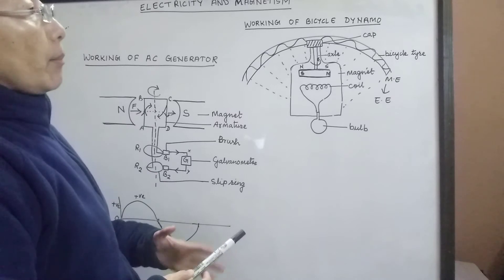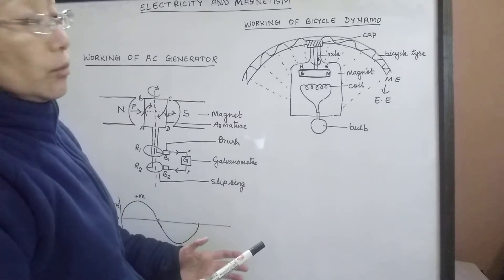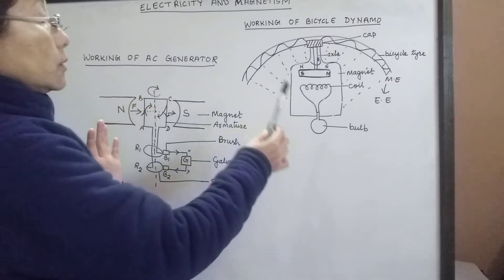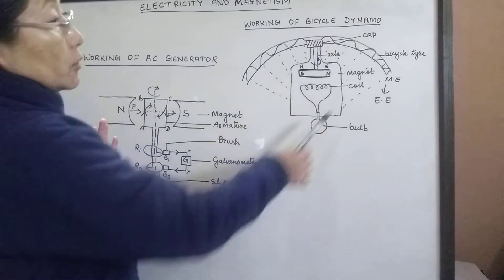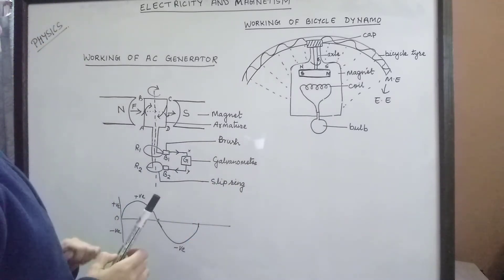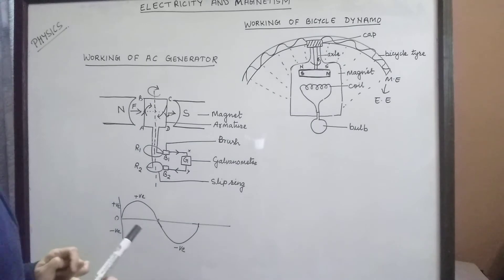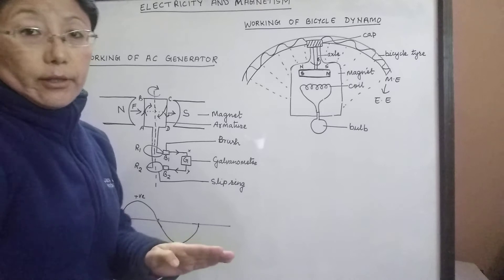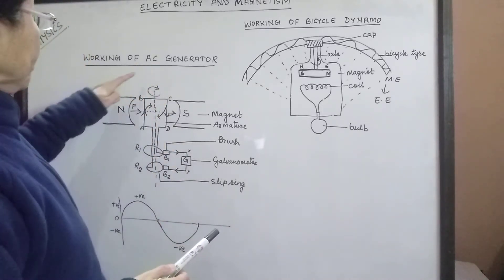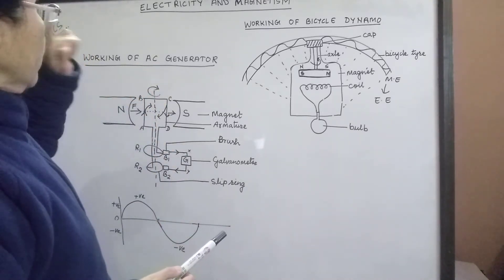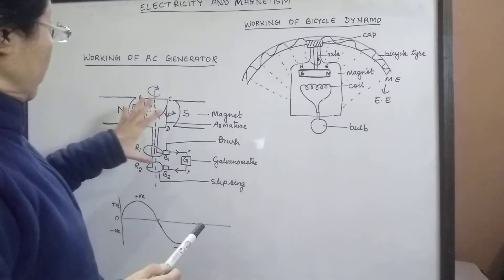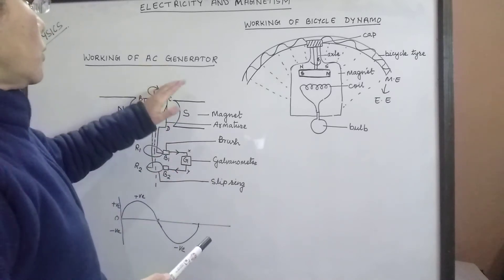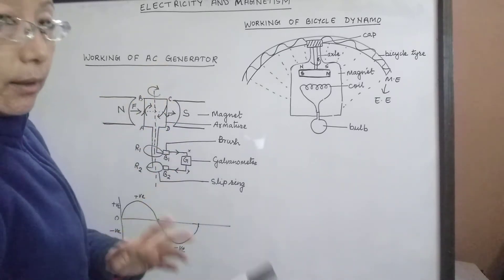The bicycle dynamo produces a comparatively small amount of current, whereas the AC generator produces a large amount of current. This is the electromagnetic induction process on the whole. Now we will go to the next part — the working of the AC generator. An AC generator is also a device which converts mechanical energy into electrical energy. The current supply which we have in our homes is because of this process of electromagnetic induction. This device works according to the principle of electromagnetic induction.